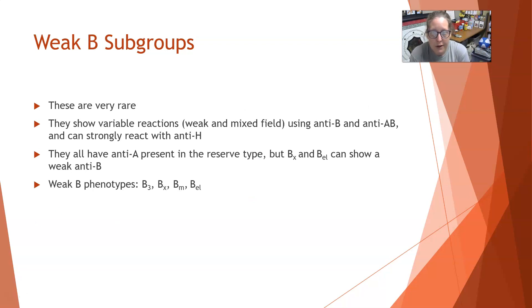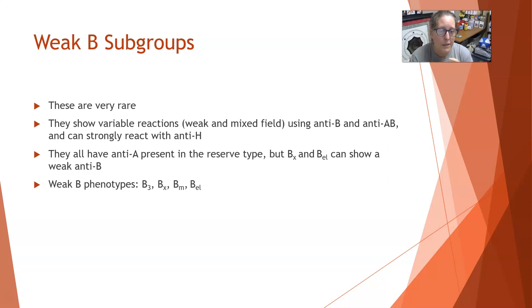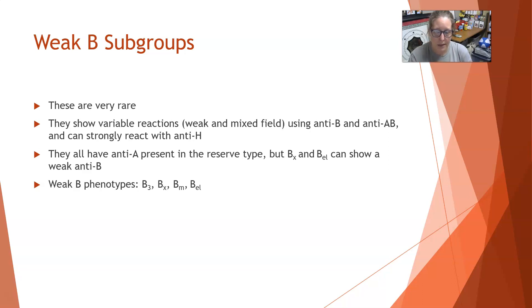Weak B subgroups are also very rare. They show variable weak and mixed-field reactions using anti-B and anti-AB in forward typing, but they can strongly react with anti-H for the same reason as weak A subgroups — they're not as efficient at adding the sugar to convert H into B type. Being a B type, they would all have anti-A present in the reverse blood type. BX and BEL can also possibly show a weak anti-B antibody in the reverse type. Weak B phenotypes include B3, BX, BM, and BEL.